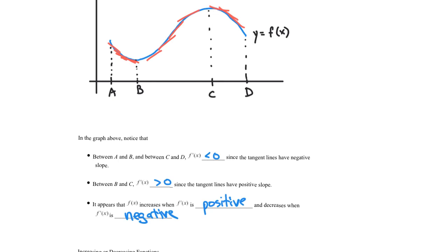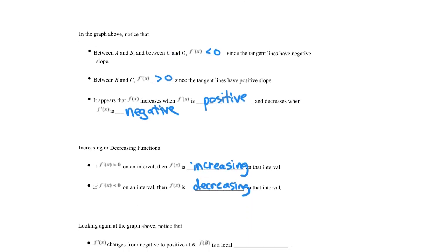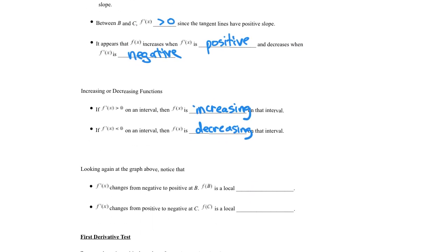To fill in the summary: when the derivative changes from negative to positive at B, f of B is a local minimum — it's f of B, the y-value, which is the local minimum. And when the derivative changes from positive to negative, f of C, that y-value, is a local maximum.